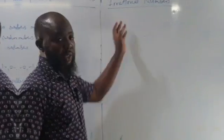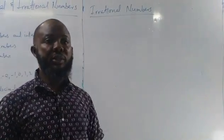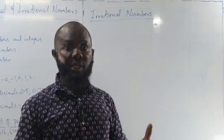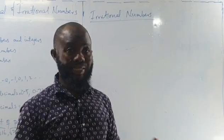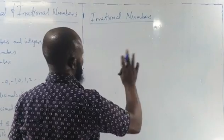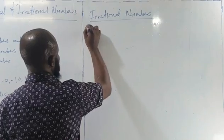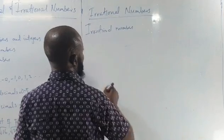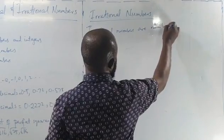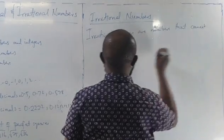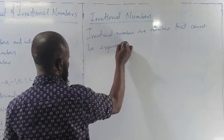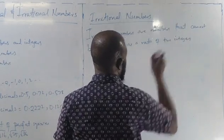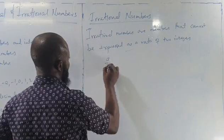Now let's move to irrational numbers. Irrational numbers are numbers that cannot be expressed as a ratio of two integers. Don't forget — rational numbers are numbers that can be expressed as a ratio of two integers, so irrational numbers cannot be expressed as A over B. Irrational is something that is non-rational.